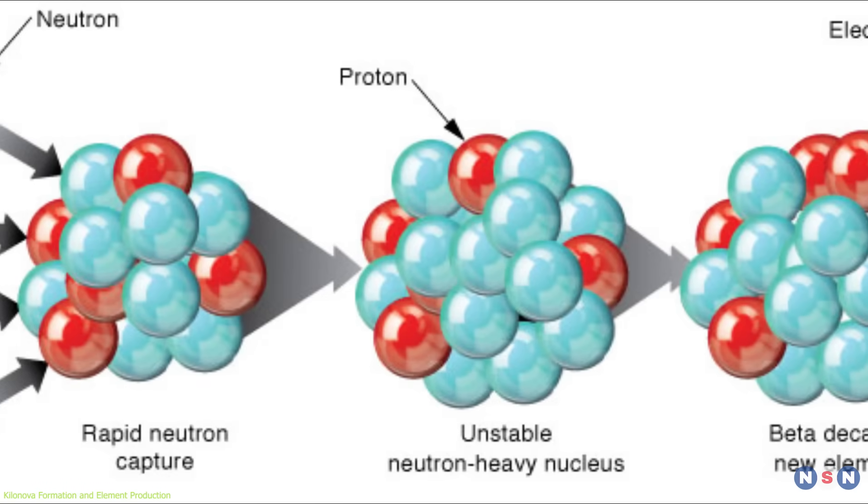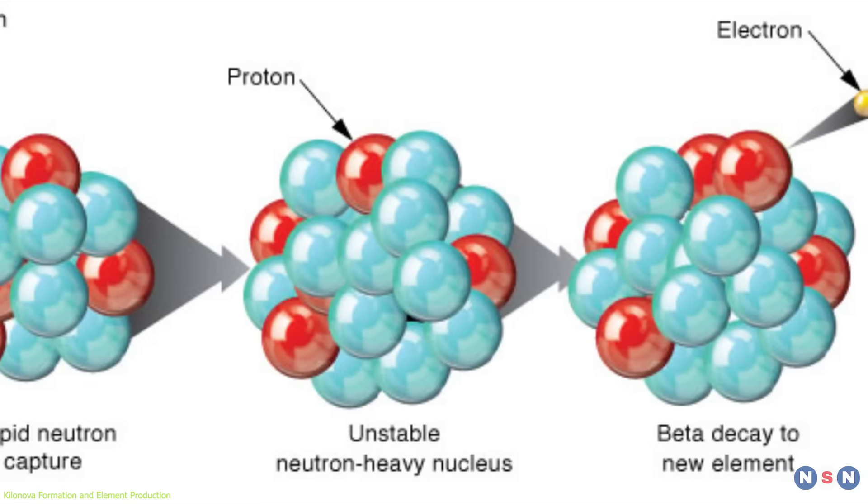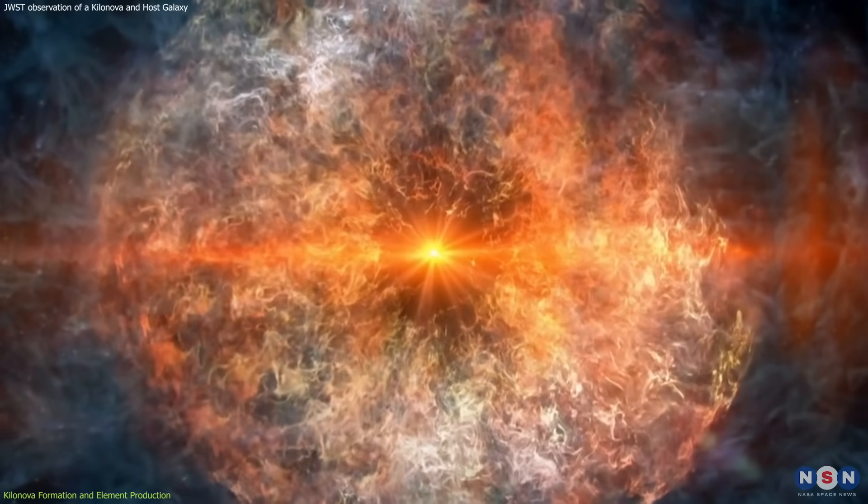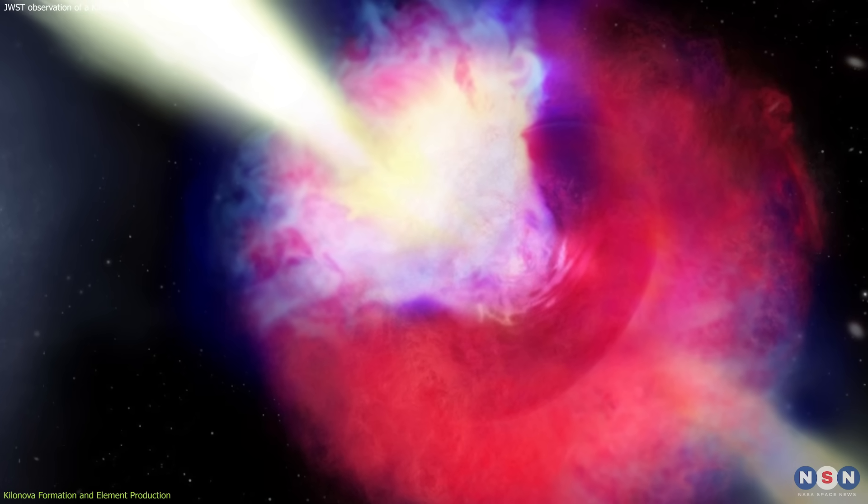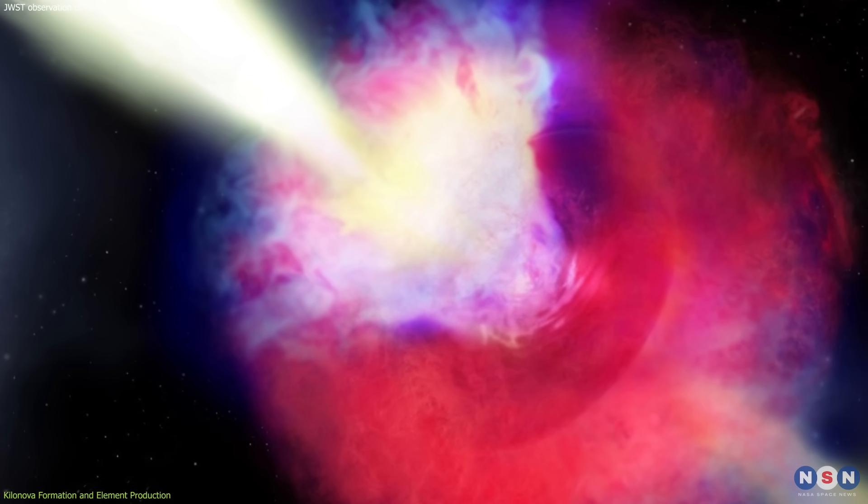These nuclei become unstable and decay into heavier nuclei, such as tellurium, iodine, and thorium. Then, they emit radiation that heats up the cloud and makes it shine.